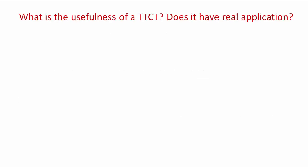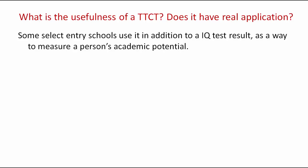So you may wonder what is the actual usefulness of a Torrance Test of Creative Thinking — does it actually have a real-world application? Well, it does. It has good useful application because it allows us to consider how creative people are in respect to a given population and also enables us to compare different given populations. Some select entry schools all across the world use it in addition to an IQ test result as a way to measure a student's academic potential, to try and decide which students they would like to enter their school.